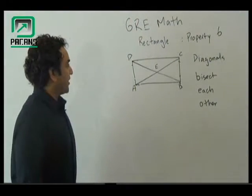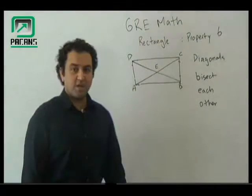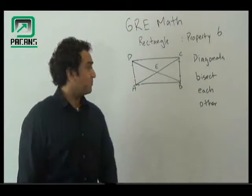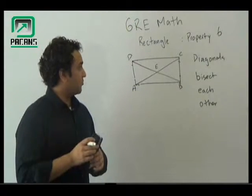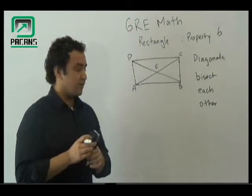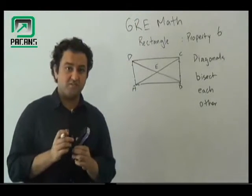Hello everyone, welcome to Peckins. We are working on rectangles theory, math, property number 6: diagonals bisect each other.